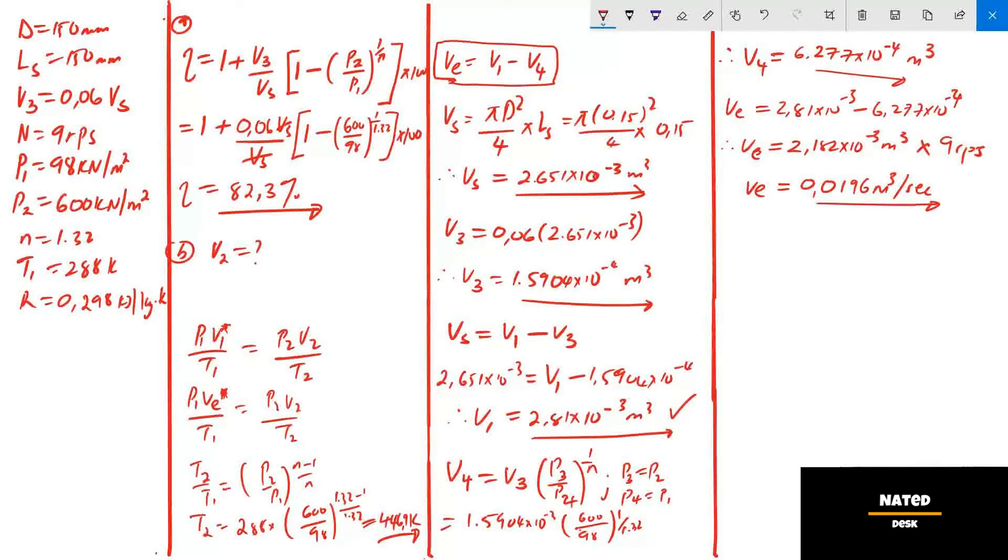Finally, let's substitute all the calculated values in this formula. 98 times 0.0196 divide by 288 equals 600 times V2 divide by 446.85 Kelvin. Therefore, V2 equals 0.004977 cubic meter per second.